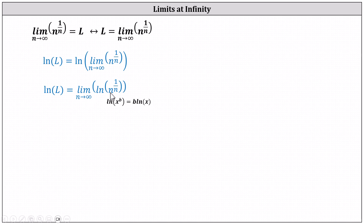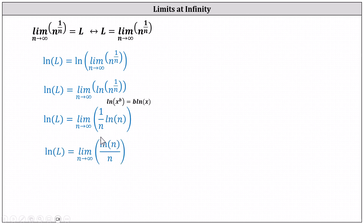This indicates we can write the right side of the equation as the limit as n approaches infinity of one divided by n times natural log n. We can write this as a quotient: the limit as n approaches infinity of natural log n divided by n.